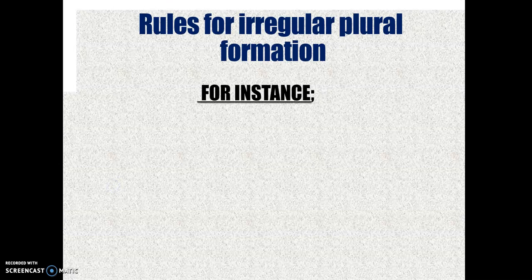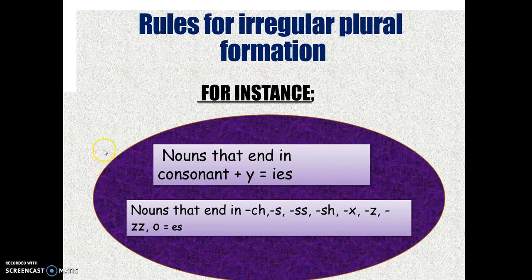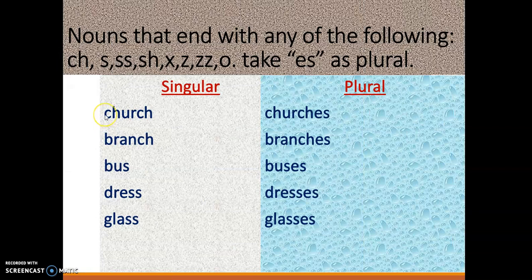Rules for irregular plural formation. For instance, in a situation where you have nouns that end in a consonant then a 'y' - that is, consonants plus 'y' - when you have consonants before the 'y', it takes 'ies'. Unlike the other one, when you have vowels before the 'y', it takes only 's'. For this one, consonant before the 'y', it takes 'ies'. Another rule: words ending in ch, s, ss, sh, x, z, zz, and o, forming its plural takes an 'es'. Take note of this - this will guide you.